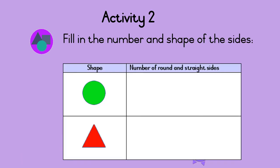Activity 2: Fill in the number and shape of the sides. Let's do the first one together. A circle has one round side. That's it! Now you do the next one. Count the number of round or straight sides in the next shape. Do this now.